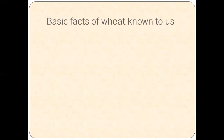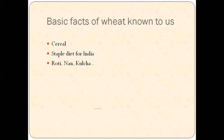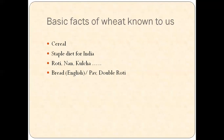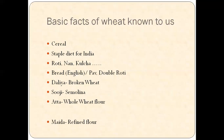Before we get into the details, let's talk about the various facts of wheat known to us. It is the first known cereal to mankind and can be traced to around 30,000 BC. It is the staple food of India, and various fermented and non-fermented breads form a part of the Indian meal, ranging from chapati, roti, naan, and kulcha. Also, the English version, that is bread, is quite common in our households, commonly known as pav or double roti. The four basic by-products of wheat known to us are dalia (broken wheat), suji (semolina), atta (whole wheat flour), and maida (refined wheat flour).